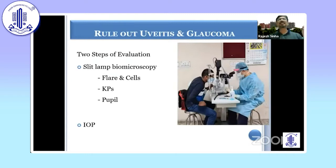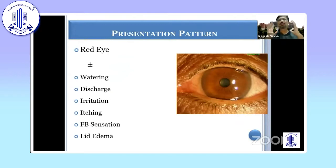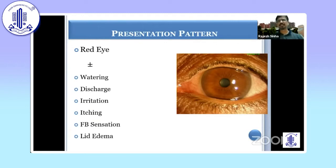For ruling out uveitis, you just have to examine the patient on slit-lamp biomicroscope — see whether there are flare and cells in the anterior chamber and retrolental area, whether there are KPs, what is the condition of the pupil (whether it is round, small, circular, reacting well, or mid-dilated), and what is the intraocular pressure. Once you have ruled out uveitis and glaucoma, of course you then think in the line of conjunctivitis.